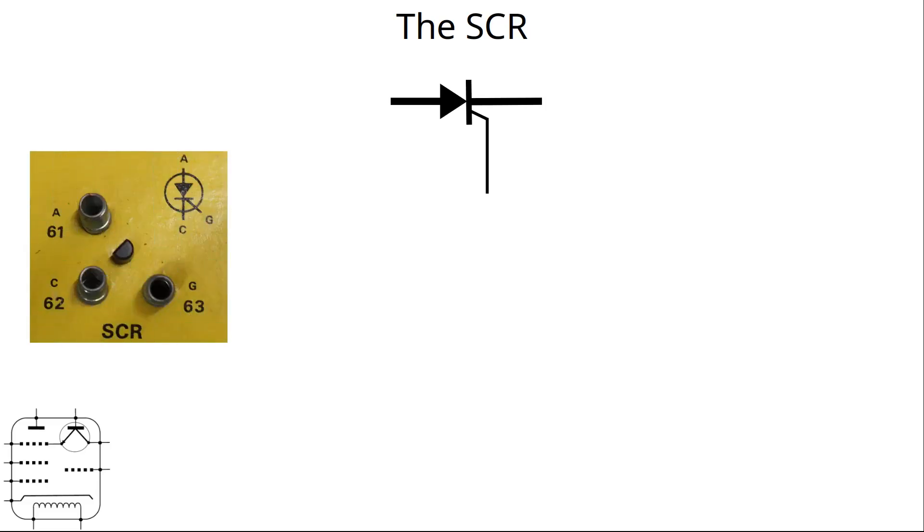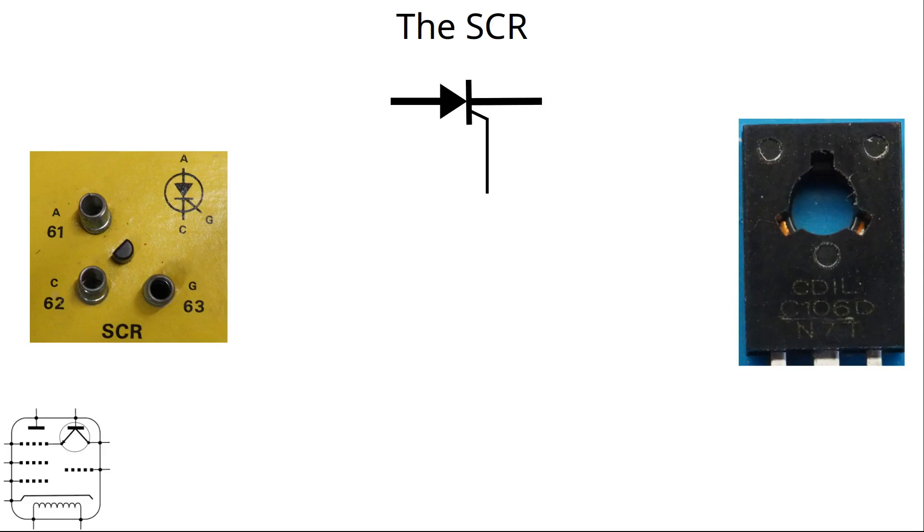Now the SCR which got me thinking about this was the one in the science fair kit, there's a picture of it there. That's a relatively small device and I didn't want to do any damage to it so I decided to get hold of something a little more substantial. So we've got a C106 which I think is about 400 volts and up to about 4 amps. Anyway I'm not going to get anywhere near that but you get the general idea.